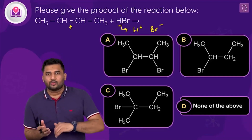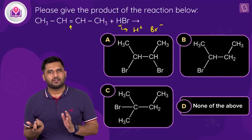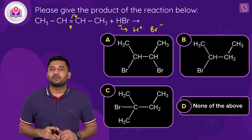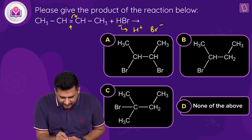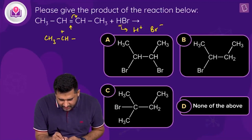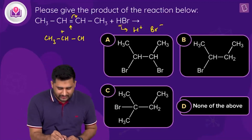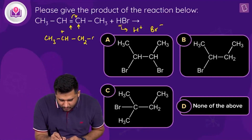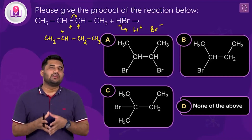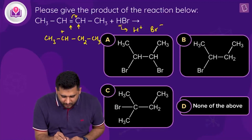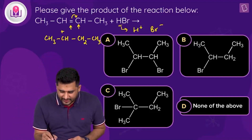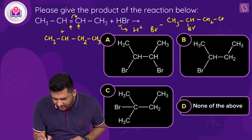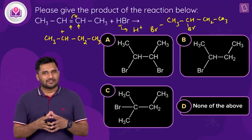The Br⁻ nucleophile attacks the positively charged carbon, giving the product CH₃CHBrCH₂CH₃. Now matching with options: Option A shows two Br atoms getting attached, which is not possible. Option B shows exactly the same product we formed. Option C has 5 carbons in the product, but the reactant only had 4, so that's impossible. Therefore, Option B is the correct answer.